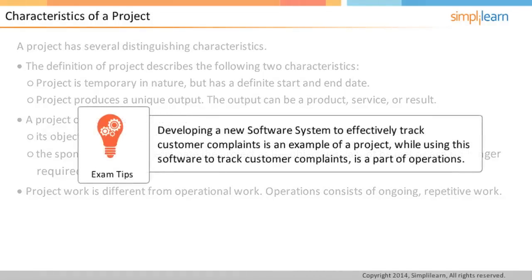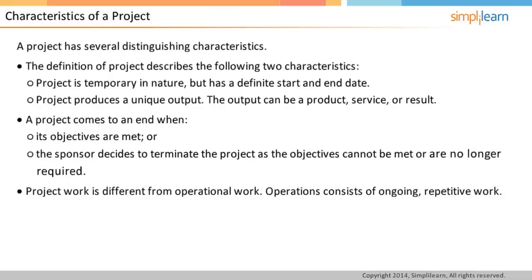Creating a new software system to effectively track your customer complaint can be an example of a project. When the software is successfully developed, the project objective is met, which marks the end of the project. When you start using this software to track customer complaints, you are entering into the operations phase. Let us now look into project management.